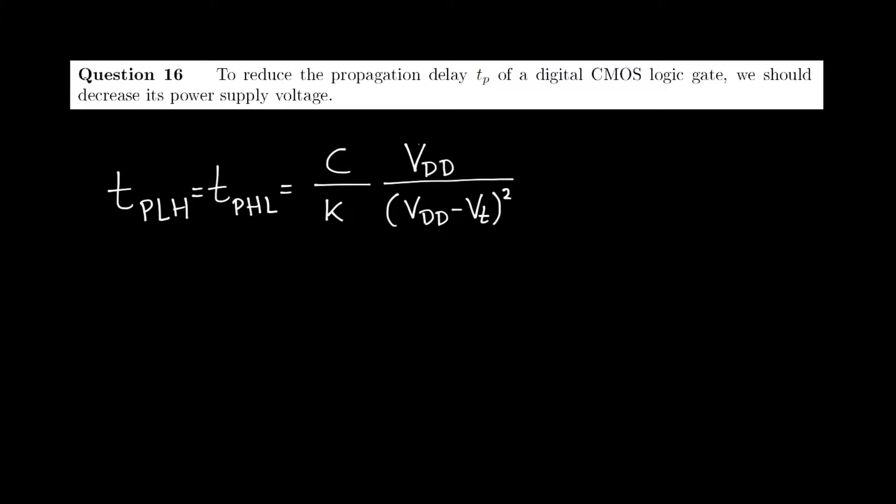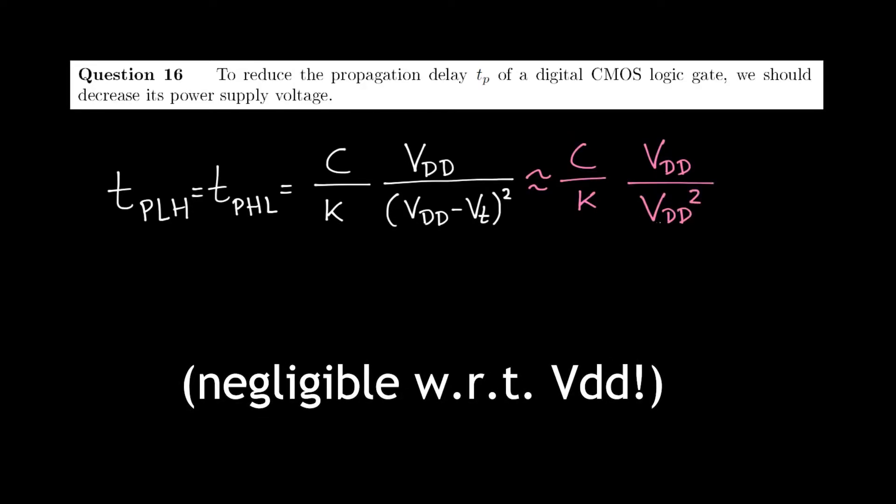If we were to increase VDD to a very high value, which is much larger than this threshold voltage, then we could say that this is approximately equal to C/K times VDD over VDD squared, because in this case VT has become negligible. And that is the same as C/K times 1 over VDD.